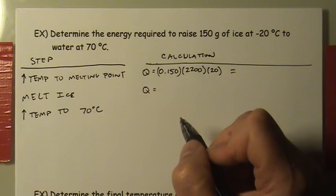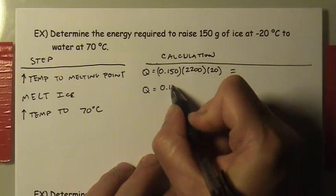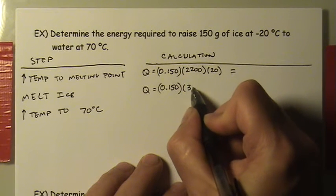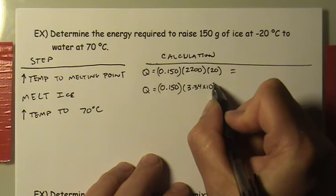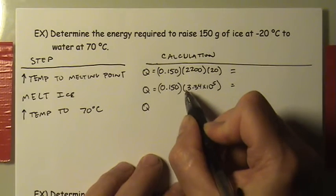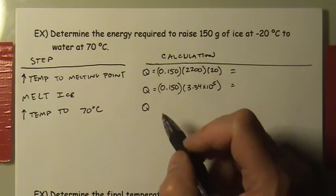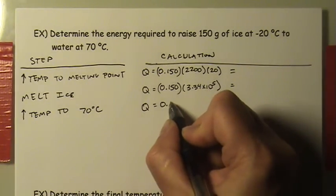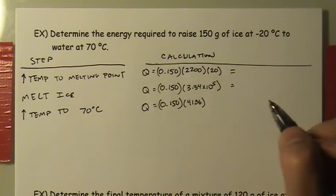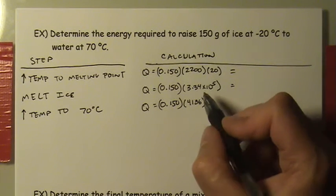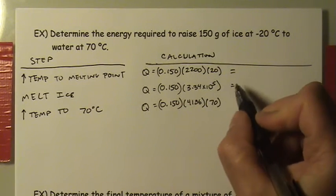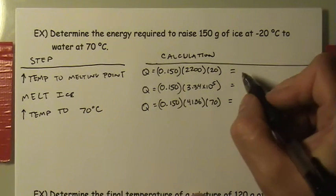Step two is melting the ice using the latent heat of fusion: 0.150 kg times 3.34 × 10^5 joules per kilogram. Step three is taking the now-melted water and raising it from 0°C to 70°C: 0.150 kg times the specific heat capacity of water, 4,186 joules per kilogram per degree, times a temperature change of 70 degrees.